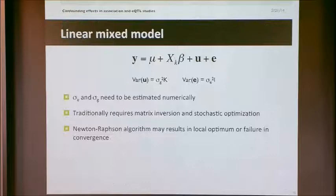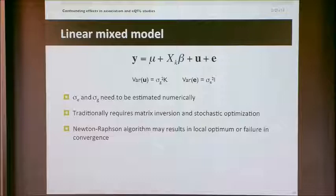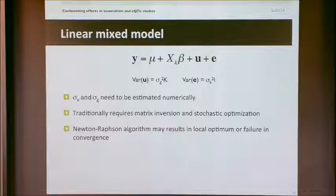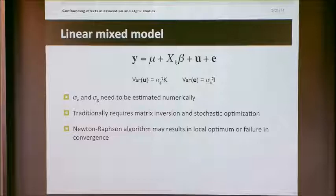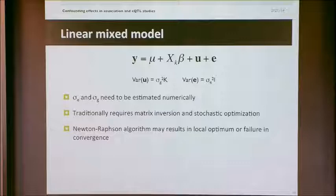Here are the nuts and bolts of how the linear mixed model is used. It's called a mixed model because you have both fixed effects — you're estimating the mean, beta, and the SNP effect — and random effects. You're trying to estimate parameters like sigma squared G and sigma squared E: how much of the variance is captured by the interrelatedness of individuals versus environmental variance. You fit all these parameters to the data and then use essentially an F test comparing a model with a SNP effect versus without to get a p-value. The key step is estimating these variance components, and the traditional approaches were very inefficient.